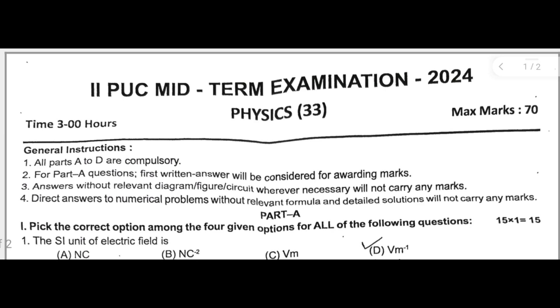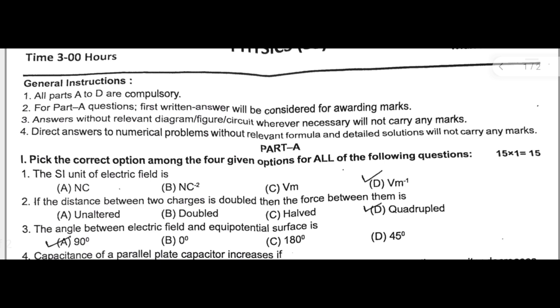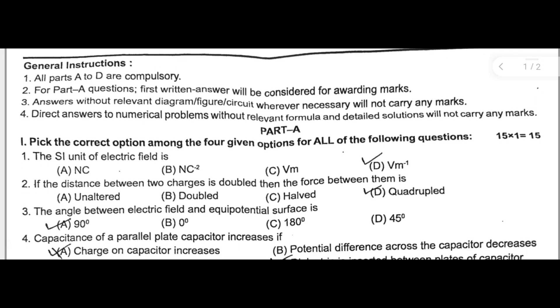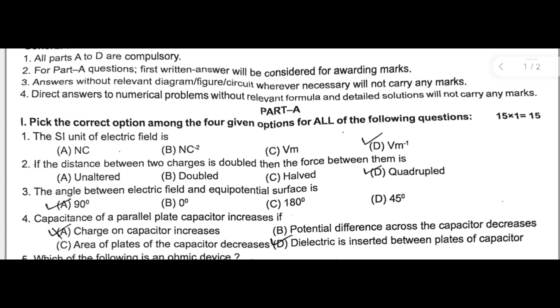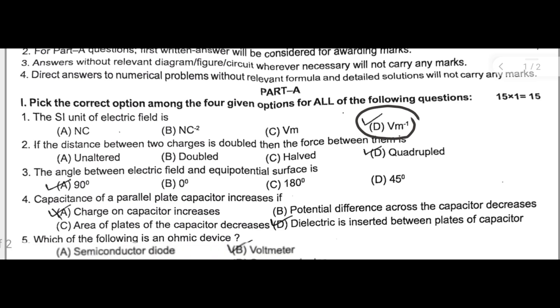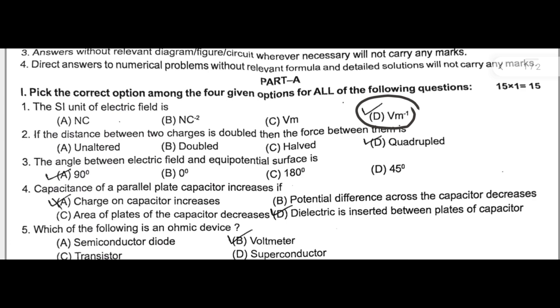First I will discuss MCQ type questions. The SI unit of electric field is volt per meter or newton per coulomb is the alternate unit. That has not been given here, that's why volt per meter. Second one: if the distance between two charges is doubled, then the force between them is quadrupled.